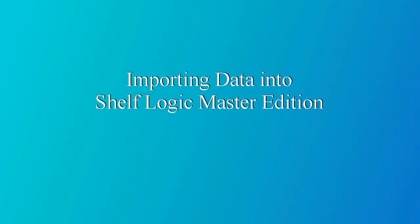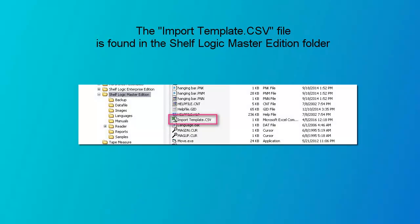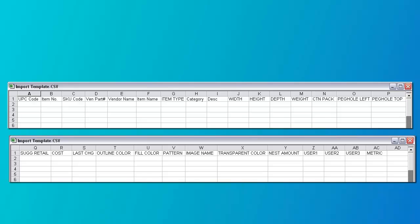The ShelfLogic Master Edition database can be imported using a spreadsheet. There's a spreadsheet called ImportTemplate.csv which is located in the ShelfLogic Master Edition folder. If you click on this file, it will open in Excel. Here in Excel, we can see all of the columns. The field headings are on the first line — you can just leave them there. You can cut and paste data from your system into the appropriate column in this spreadsheet.